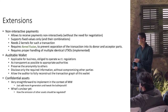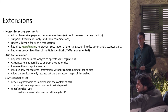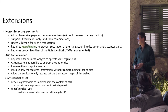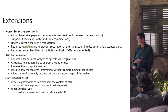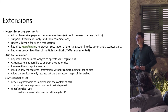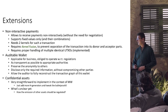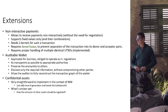We also have an extension called the auditable wallet. Because Mimblewimble is very non-transparent, there are schemes where businesses obliged to operate under regulations can build transactions such that authorities with certain secret keys can identify their transactions and get all the details. There is also an option to trade confidential assets. Since a Mimblewimble commitment is built from two generator points, you can add more generator points to get commitments encoding values of other types, making it possible to trade coins of many different types on the same blockchain.